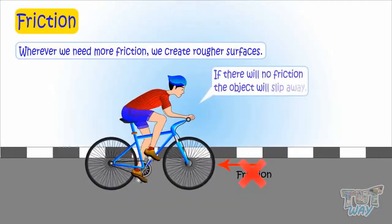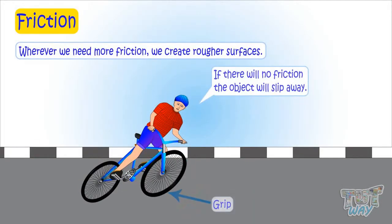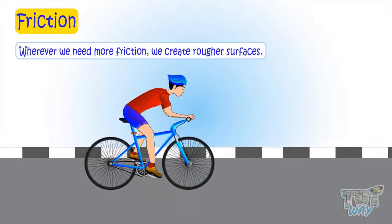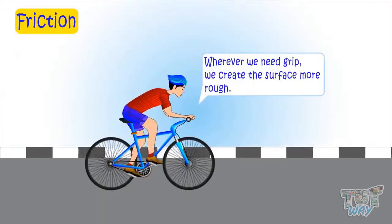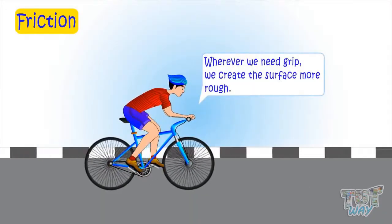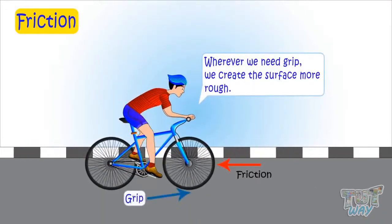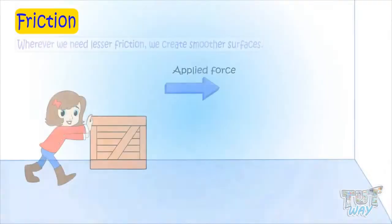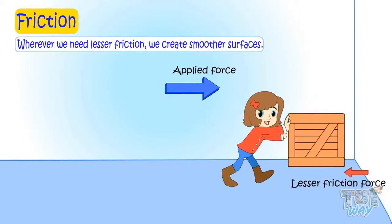If there were no friction, things would just slip away. There will not be any grip between two objects. This is why whenever we need more grip we create surfaces rough, so that there is more friction and more grip. And wherever we need two objects to slide past each other, we create lesser friction by making the surfaces very smooth.